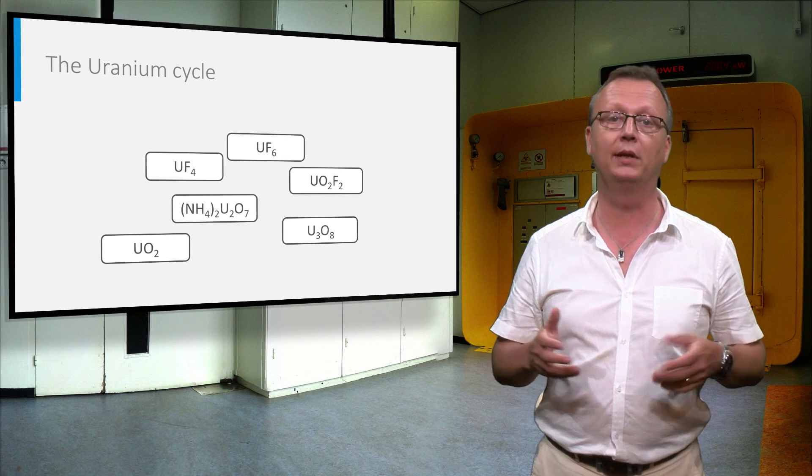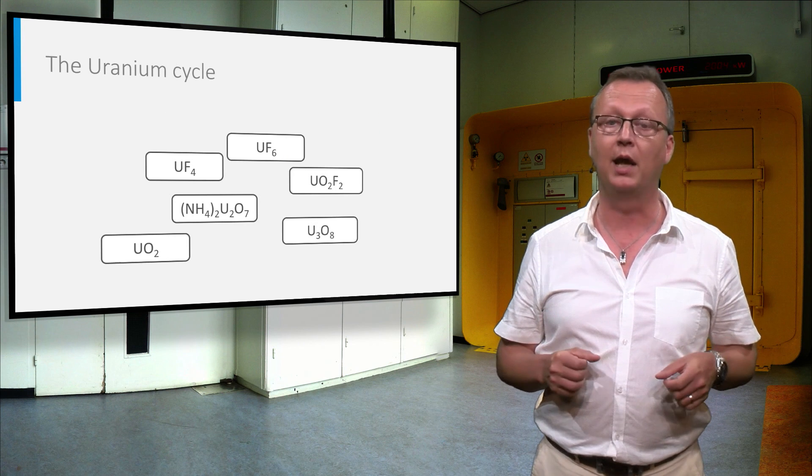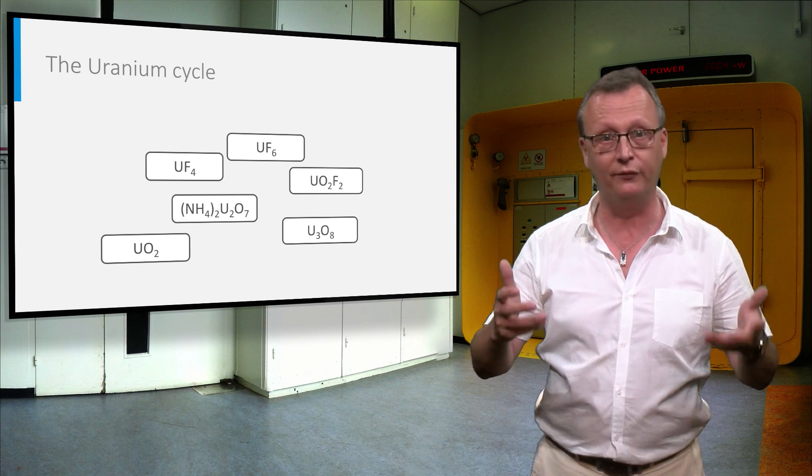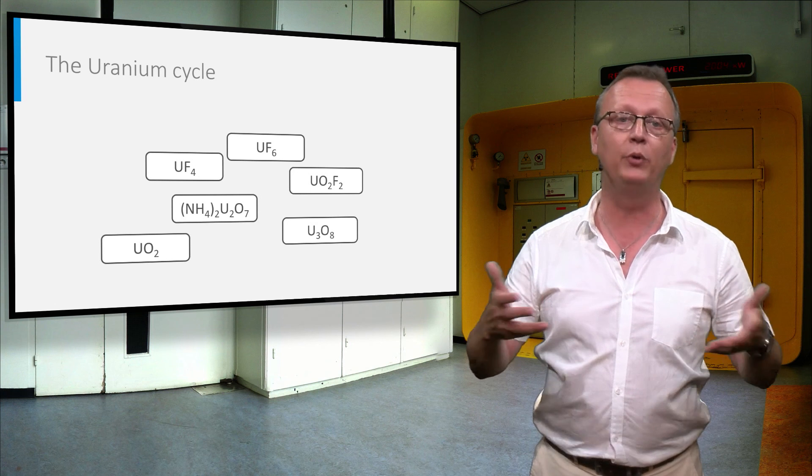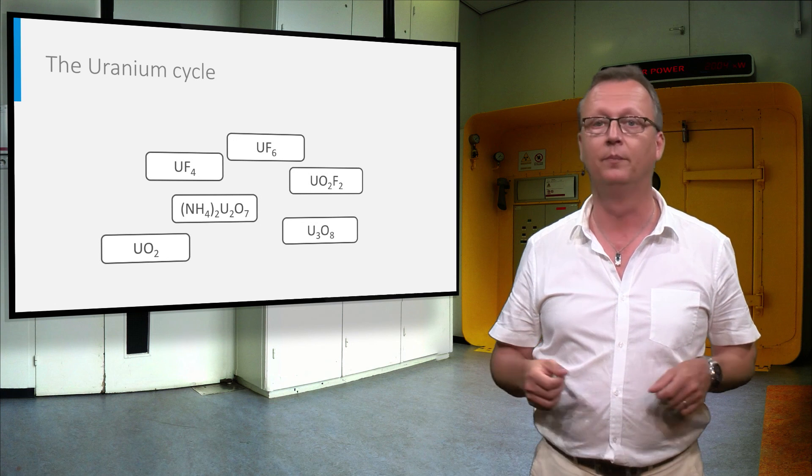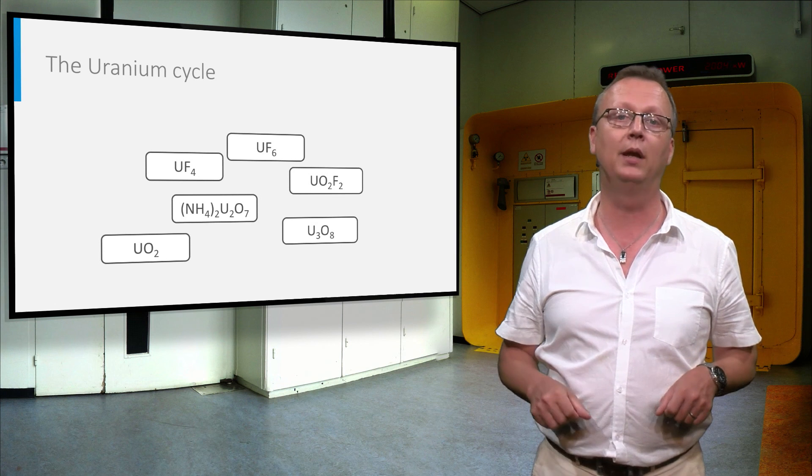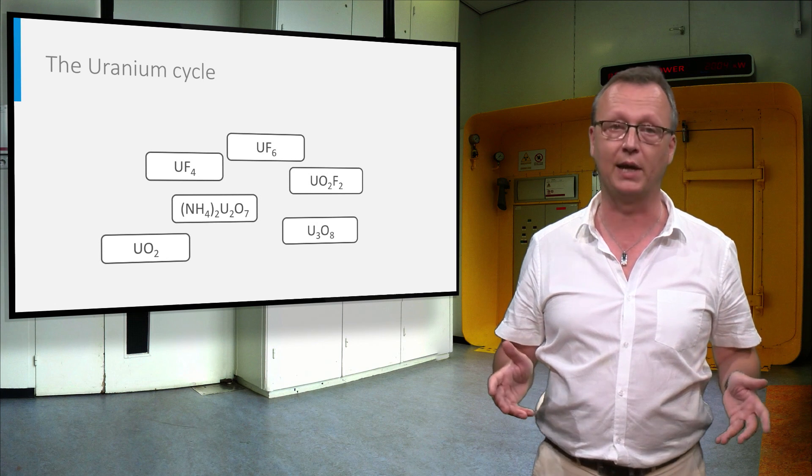All in all, we can say that the nuclear fuel cycle has very much to do with the conversion between chemical forms of uranium in order to purify, enrich, fabricate and dispose the fuel. You can see the most important components here. In the next lecture we will elaborate on their role in the nuclear fuel cycle.